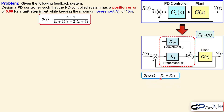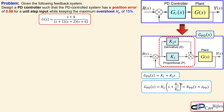The PD controller is then k1 plus k2*s. Converting to standard form, you can recognize the PD controller gain and the PD zero: k2 is directly the PD controller gain, and k1 over k2 is the ratio which gives the PD controller zero. We will use this later.